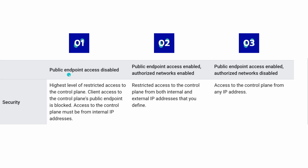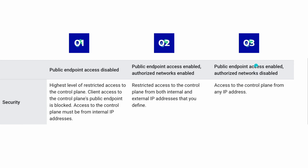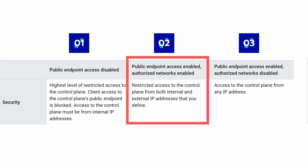The first option has the highest level of restriction because nobody from the internet can access the control plane — companies use VPNs or direct connectivity to GCP to connect from their laptops through a tunnel. The second option — which I'll demo — is in between: you can give restricted access to the control plane from specific internal and external IP addresses. The third, giving access from any IP, is not what Google recommends.